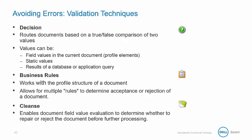For batch documents with multiple records, the Business Rules shape iterates through the whole document to accept or reject each logical record based on the rules. The Cleanse shape enables you to evaluate document field values to determine whether to repair or reject the document before further processing.